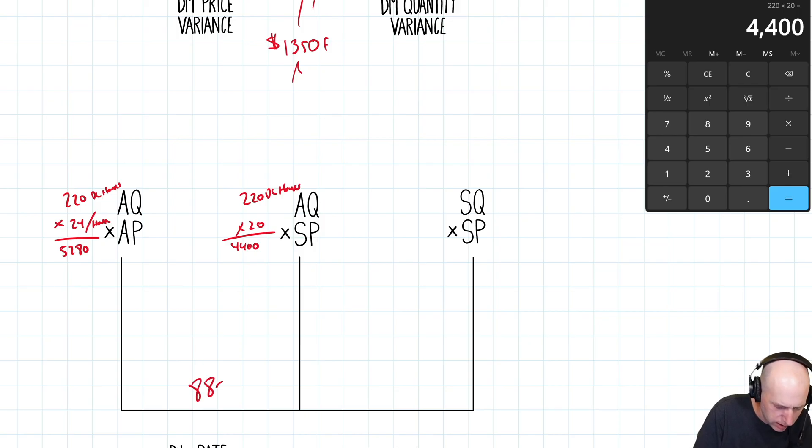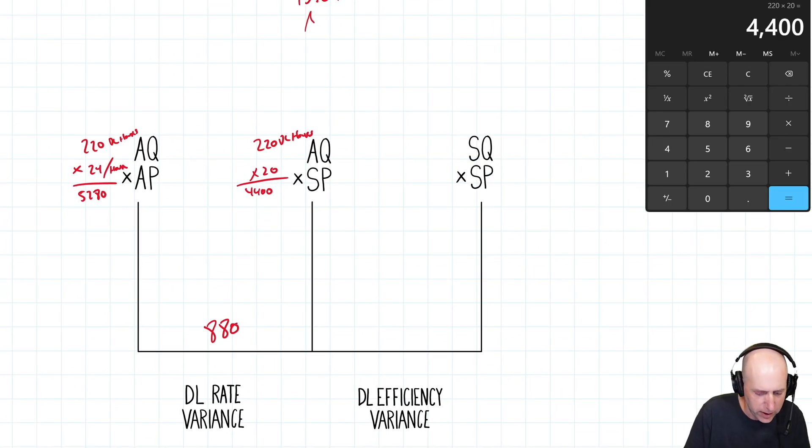And you can see there's a difference there of 880. Now is this a good difference or a bad? Is this favorable or unfavorable? The answer is, well, I'm supposed to pay $20 an hour, I paid $24. I overpaid. This is unfavorable. I overpaid compared to my standards. Good for the employees, they got more money, but bad for me. Maybe it's just an outdated standard. There could be lots of reasons for this, but we did overpay. The wage rate was higher than what we anticipated.